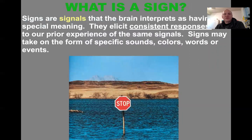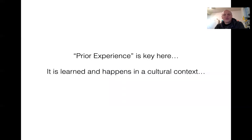Signs are signals that the brain interprets as having special meaning. They elicit consistent responses and are based on our prior experience of the same signals. Signs might take the form of specific sounds, colors, words, or events. When we see a stop sign, first we're seeing the signal — the red octagon — then we interpret that signal as a sign. Prior experience is key here; it's learned and happens in a cultural context. We aren't born knowing what a stop sign means; we're born with the ability to interpret the signal of red or the octagon shape.